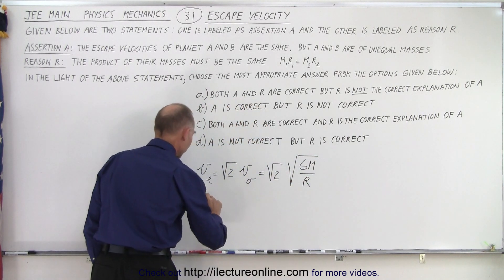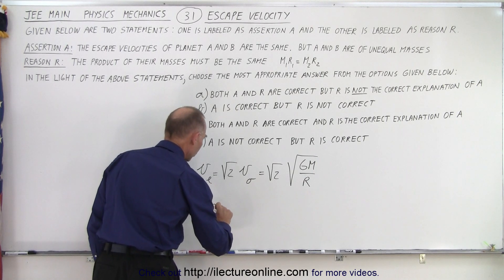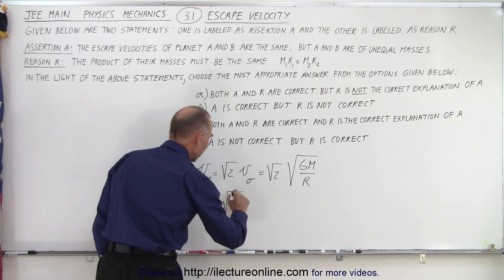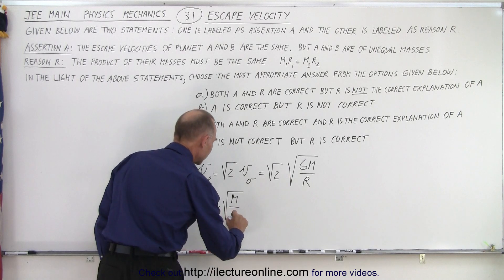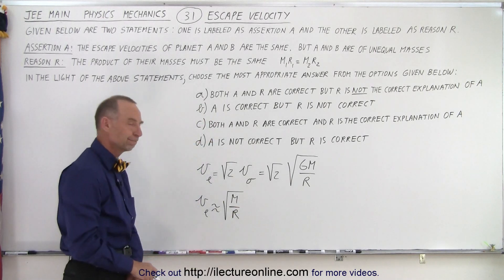In other words, the escape velocity is proportional to the square root of the mass of the object divided by the radius of the object.